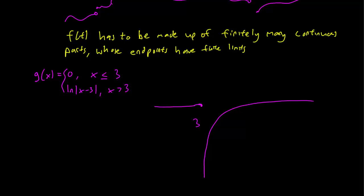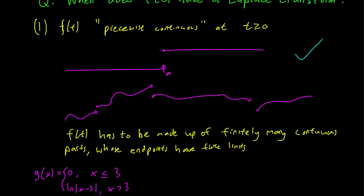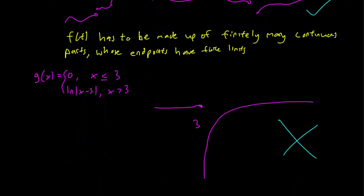So this has only two continuous parts. However, this endpoint has a limit at minus infinity, so it doesn't have a finite limit. So this would not be a piecewise continuous function, whereas the step function is, and this function that we drew is. So that's the first condition, that F(t) has to be made up of finitely many continuous parts, and the endpoints have to behave nicely. You can't go to infinity.